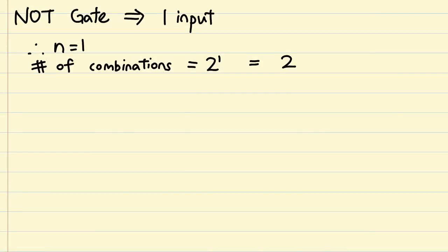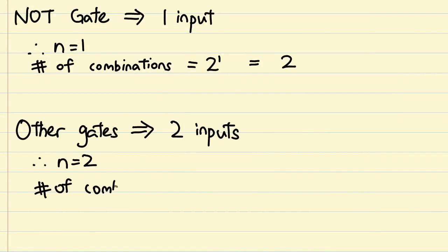In the case of the NOT gate, there was only one input, or one binary digit worth of data. That makes it 2 to the power of 1, or 2. Since now we are dealing with two inputs, this means n becomes 2, and the number of combinations is 2 to the power of 2, or 4.